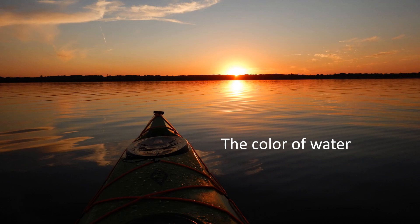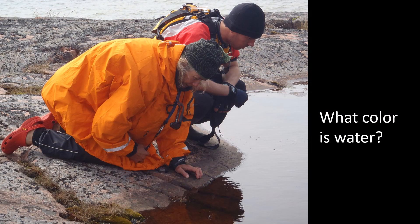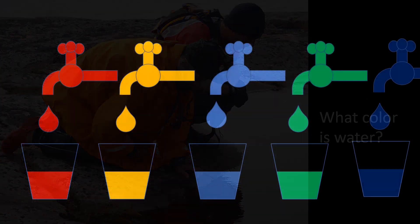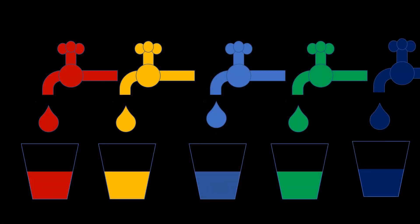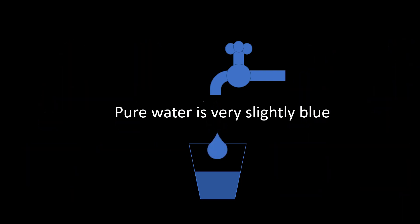So, what is the colour of water? Pure water in a glass appears completely clear, but in reality it has a small amount of colour of its own. Pure water is very slightly blue.